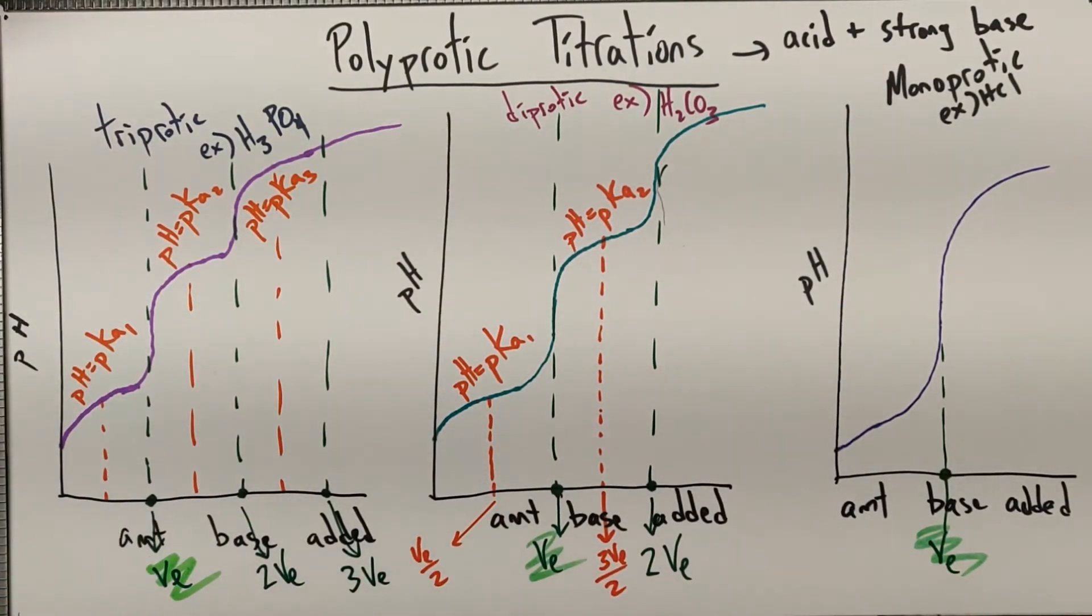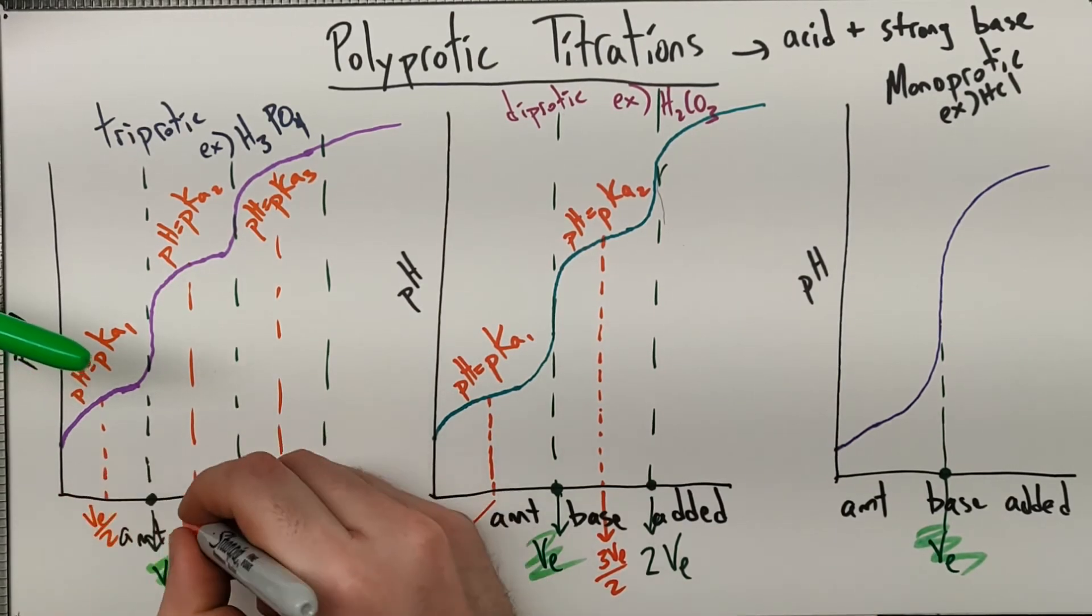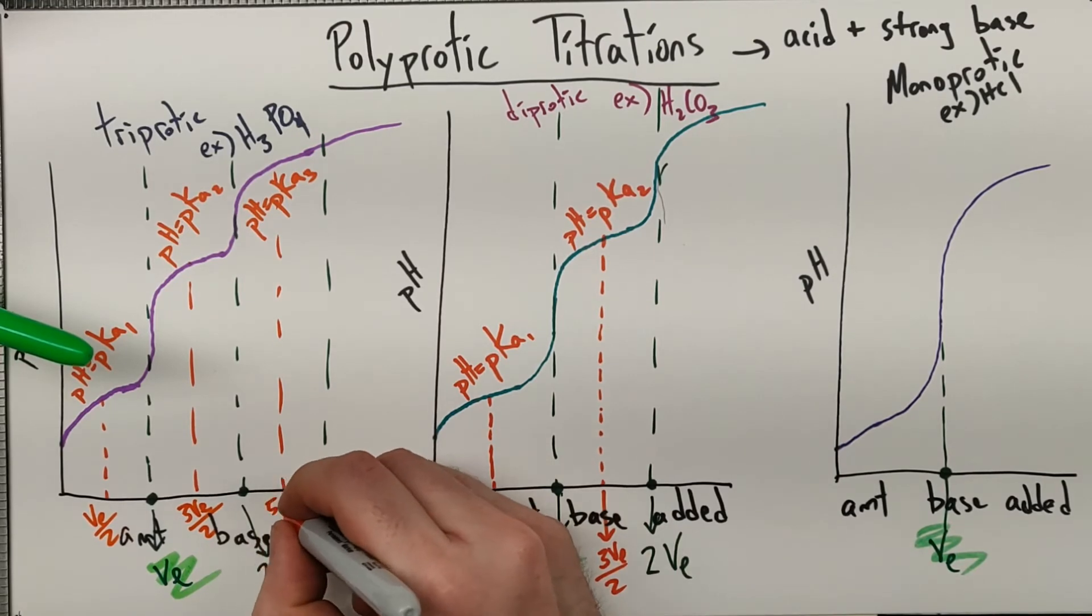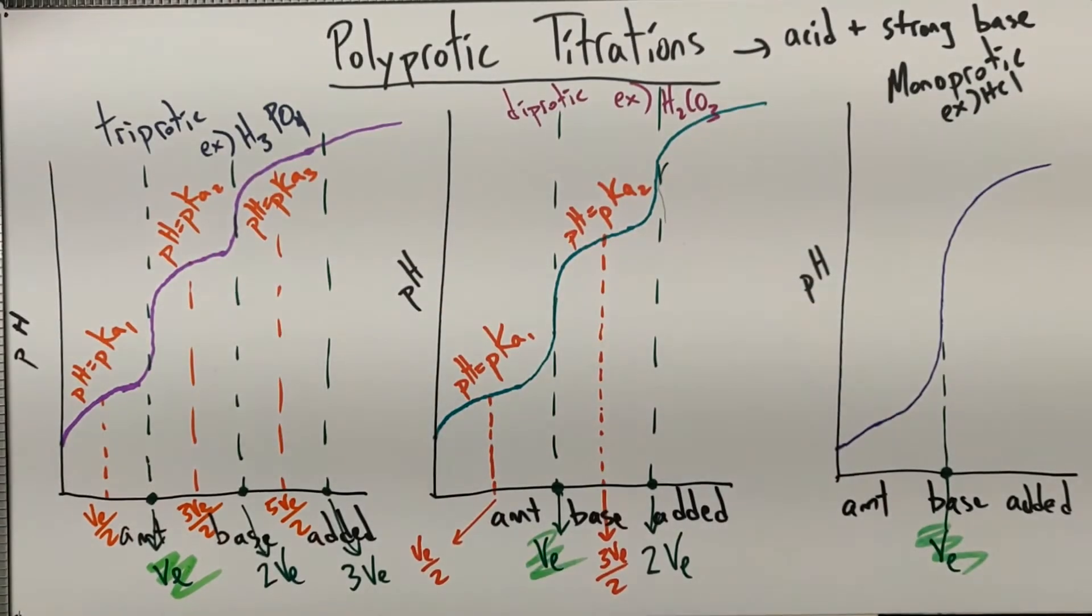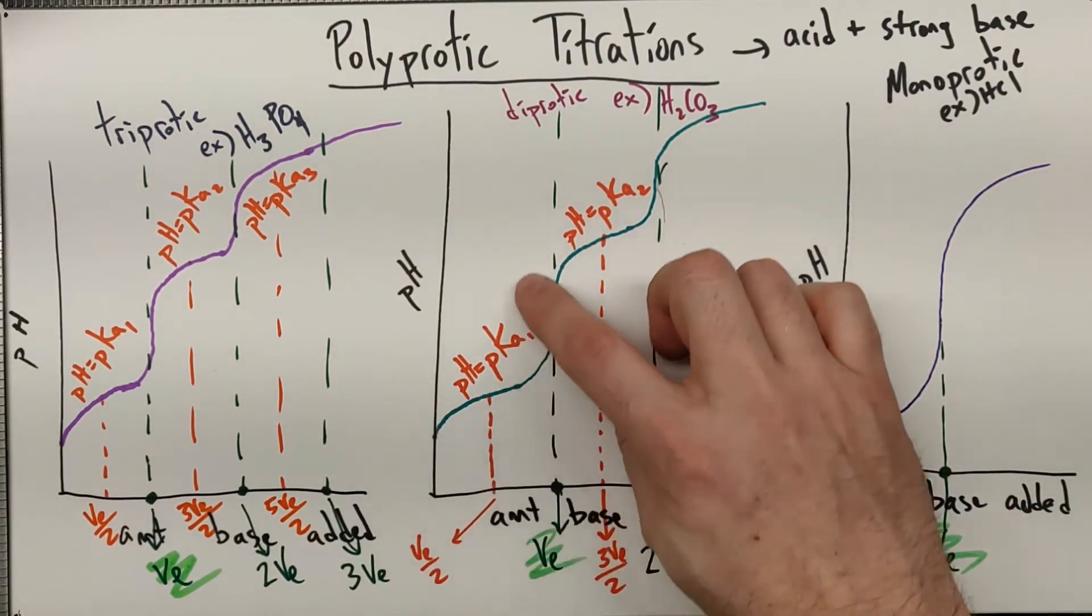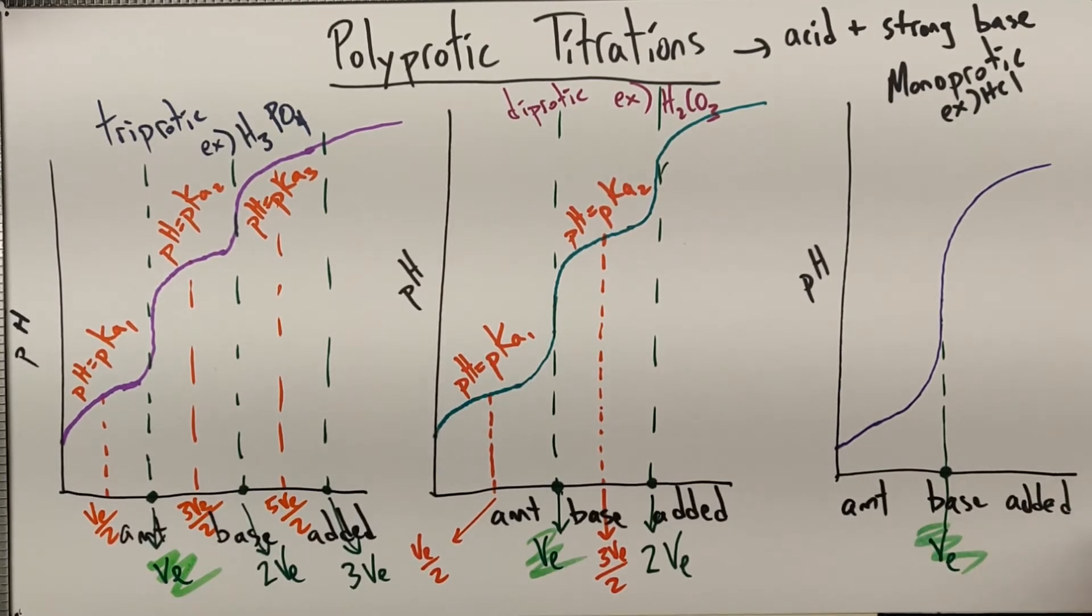And then over here now, we have three times the equivalence volume. And so that's how that sets up. This is VE over 2, 3 VE over 2, and 5 VE over 2, where those happen. So you can use this type of data to figure out, knowing this is a buffer, if you see the two bumps there, you can predict, oh, it's diprotic or whatever. I have a lab that I have my students do where they have to identify and narrow down from five acids, which is which, based on titration curves and other data like that.